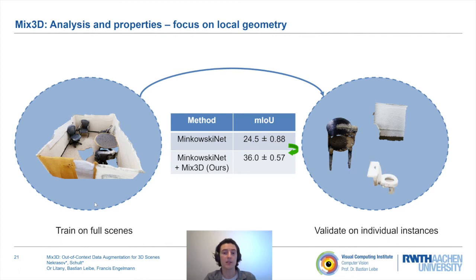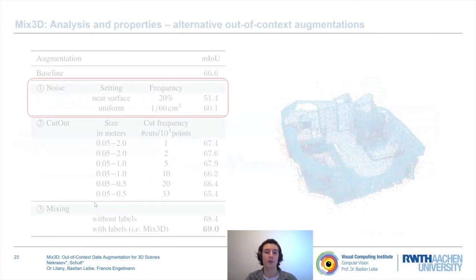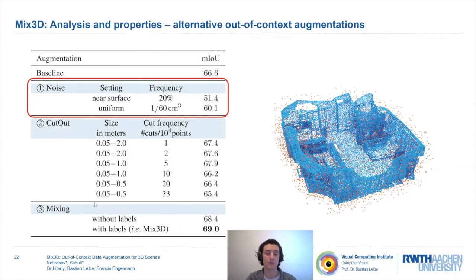Next, we seek to find a simpler approach than Mix3D for balancing global context and local features. For this, we look into various alternative out-of-context augmentations. First, we show random noise augmentations as a way of obscuring scene context. We present two flavors. First, we add random noise close to object's surface. Second, we add random noise uniformly. Adding these noise patterns drastically reduced performance compared to the baseline.